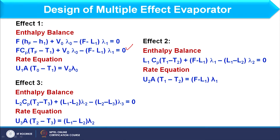First let us see how the non-linearity occurs. If we focus on the first equation, f·Cp·Tf will be known, only T1 will be unknown, so this term is not non-linear. Lambda-naught is known, V-naught is unknown, and L1 is also unknown — but this equation is purely linear in nature. However, if I focus on the second equation, U1 is known, A is unknown, T-naught is known, but T1 is unknown. Considering the product term A·(T0 − T1), the equation becomes non-linear in nature.